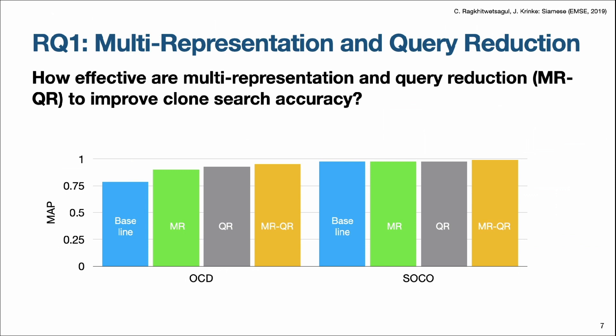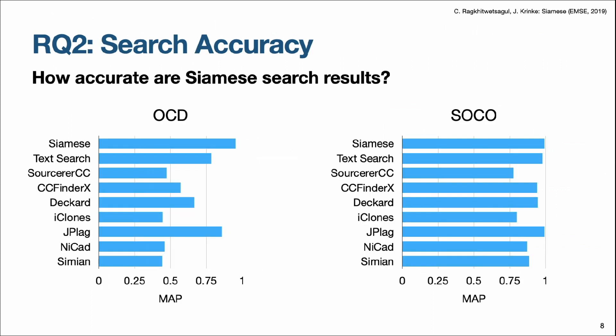We have evaluated Siamese in different aspects. First, we see how effective multiple representations and query reduction are in improving clone search accuracy. We found that by having both MR and QR, we can achieve the highest mean average precision compared to using either MR or QR alone, and compared to the baseline text search. We also compared Siamese to other text search engines and code clone detection tools on the same two datasets, and found that Siamese gives the highest mean average precision when searching for clones.